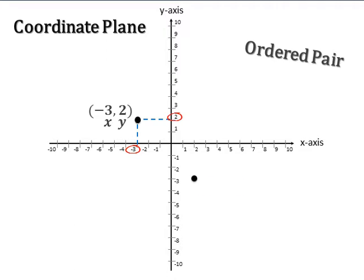The order of the pair of numbers is important. Notice that point negative 3, 2 is not the same point as 2, negative 3.